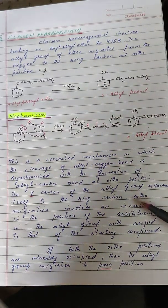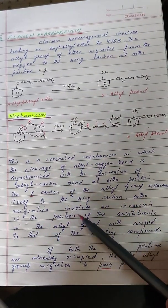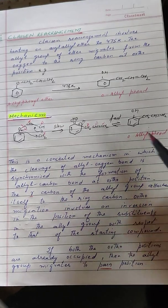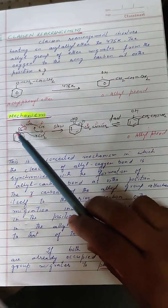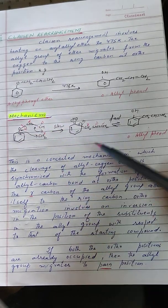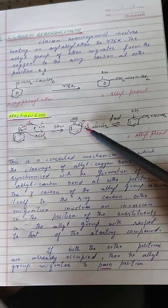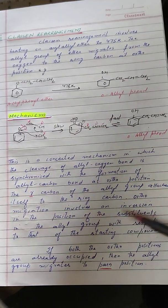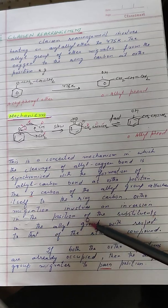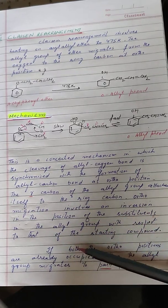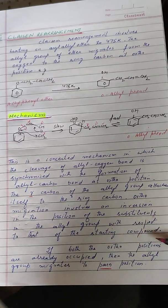We can see that ortho migration involves an inversion in the position of the substituents. Initially the point of attachment with the aromatic ring was through the alpha carbon; now the point of attachment is via the gamma carbon. That is why we say ortho migration involves an inversion in the position of the substituents in the allyl group with respect to the starting compound.